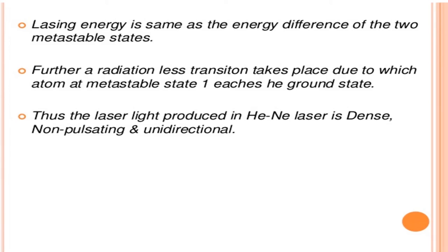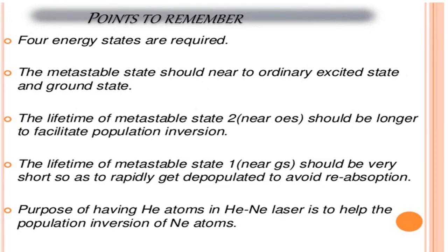The laser light produced in the helium neon laser is dense, non-pulsating, and unidirectional. Key points to remember: four energy states are required; the metastable state should be near the ordinary excited state; the lifetime of the metastable state near the excited state should be longer to maintain population inversion; the lifetime of metastable state M1 near the ground state should be very short to rapidly depopulate and avoid reabsorption. The purpose of having helium atoms is to help achieve population inversion of neon atoms.